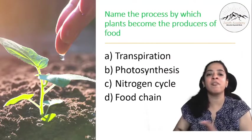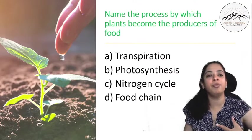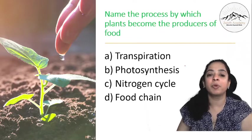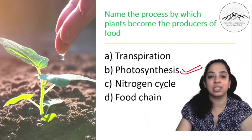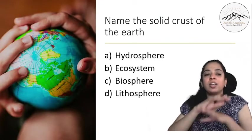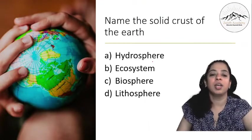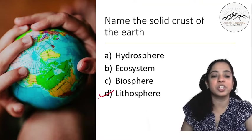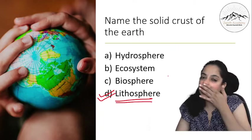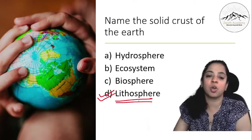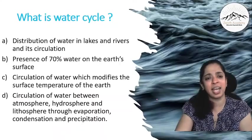Name the process by which plants become the producers of food. We know plants produce the food by the process known as photosynthesis. So this is the correct answer. Name the solid crust of the earth, the outermost. This is also a direct question. It is lithosphere. Hydrosphere is water bodies, right? So these options are wrong. Lithosphere is the correct answer. Direct question.